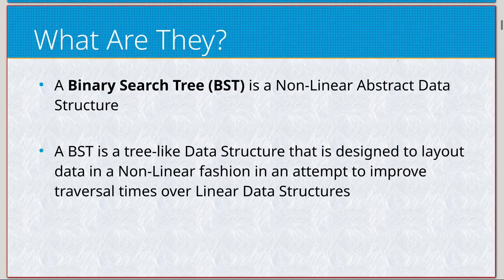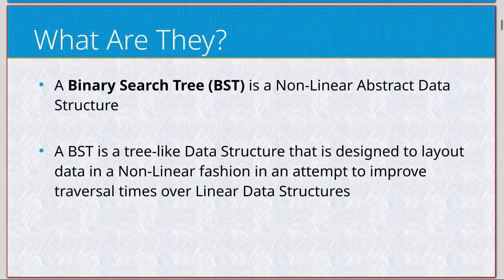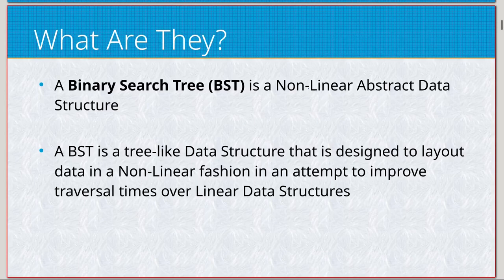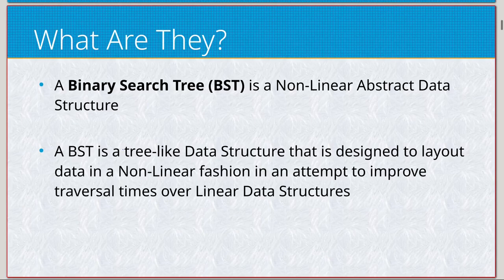We've gone over linear abstract data structures — linked lists, stacks, and queues — which have a more dynamic approach to memory using pointers rather than contiguous data like arrays. With binary search trees, it's very similar, except now we have multiple directions to traverse — specifically two: the left child and the right child. There are non-binary trees that can have any number of children, and also graphs and hash tables that handle data entirely differently. The binary search tree is a tree-like data structure designed to lay out data in a non-linear fashion to improve traversal times over linear data structures.